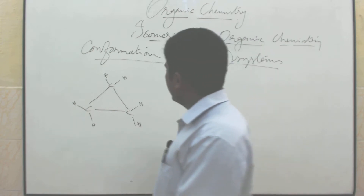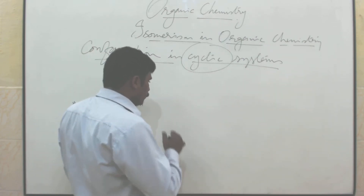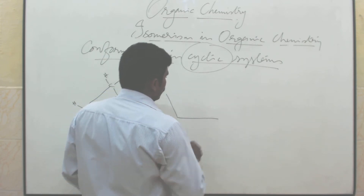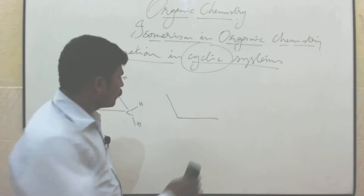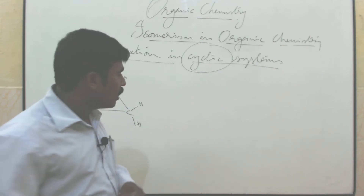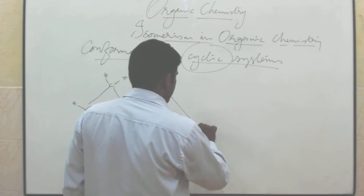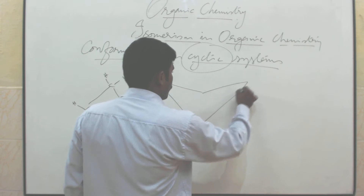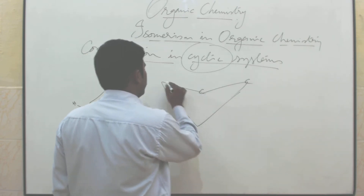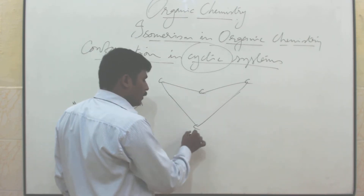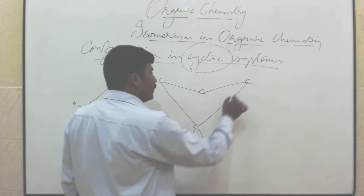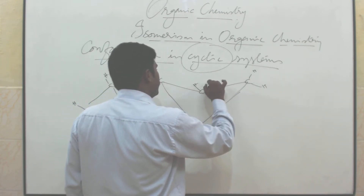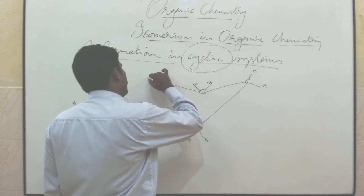What about one more? With 4 carbons we can do it another way. You see 4 carbons: 1 carbon, 2 carbon, 3 carbon, 4 carbon. That means each and every carbon is bonded with 2 hydrogen atoms, because it is a ring.